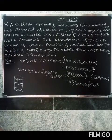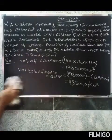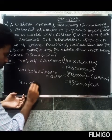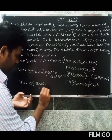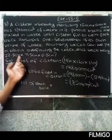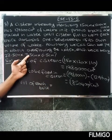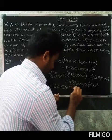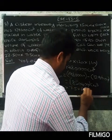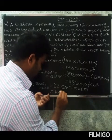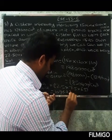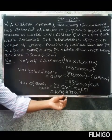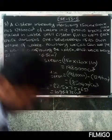Next, volume of each brick equals 22.5 into 7.5 into 6.5, which equals 1,096.875 cubic centimeters. So volume of each brick is 1,096.875 cubic centimeters.